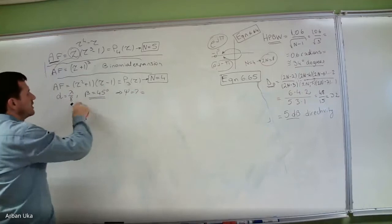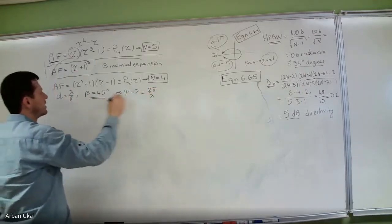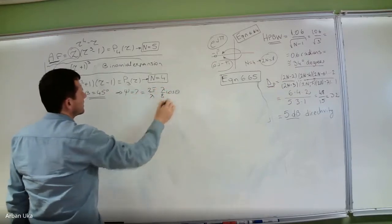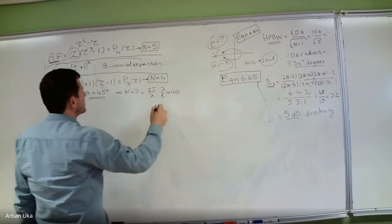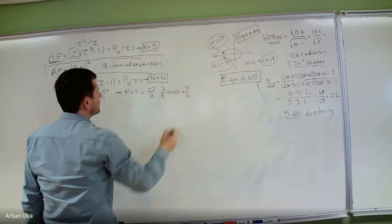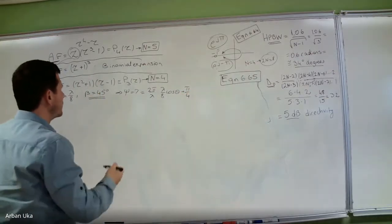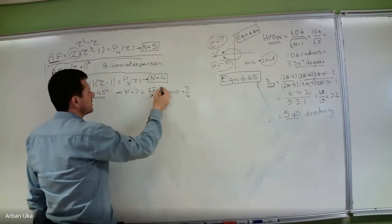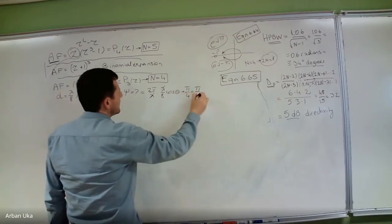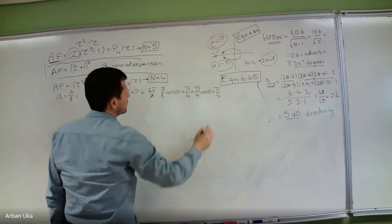For ψ, we can say this is equal to kd·cosθ + β = (2π/λ)(λ/8)·cosθ + π/4. We can cancel terms and get ψ = (π/4)·cosθ + π/4.